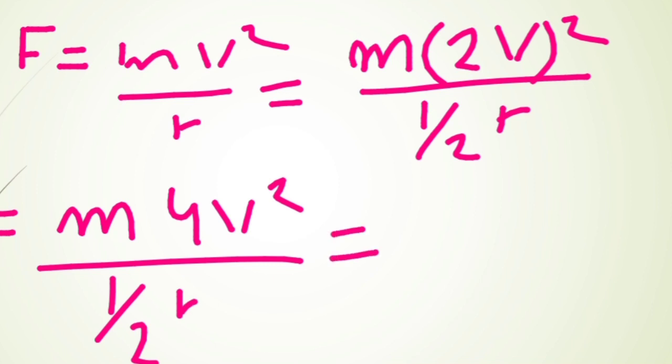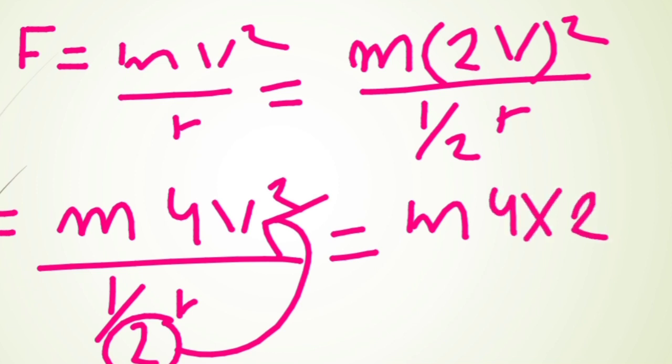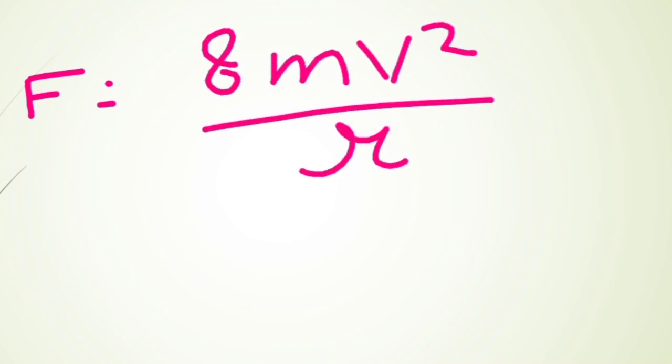So it will be m times 4 multiplied by 2V square upon r. Then it will be force equal to 8mV square by r. That's why our answer was 8 times increase.